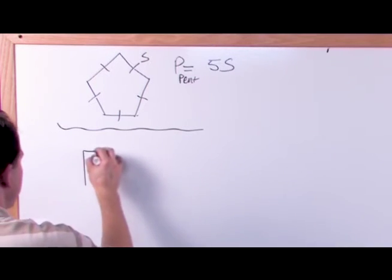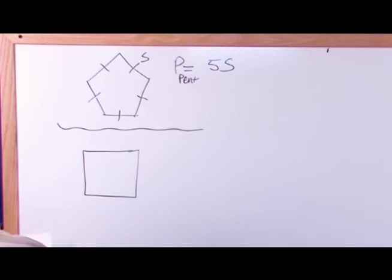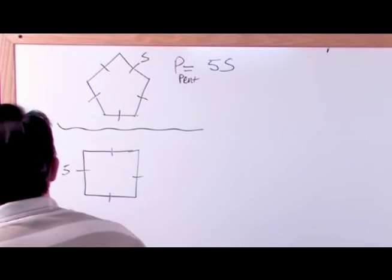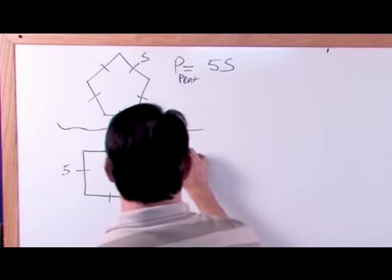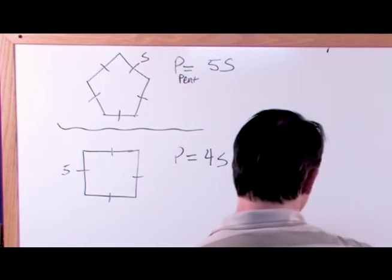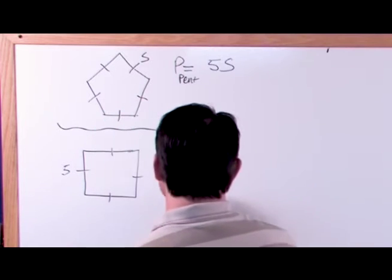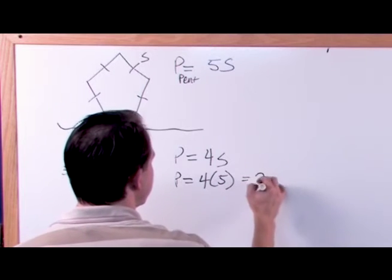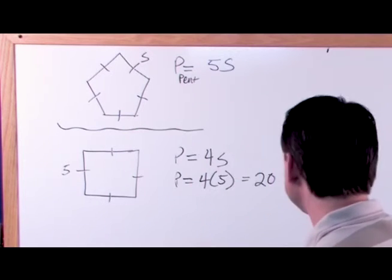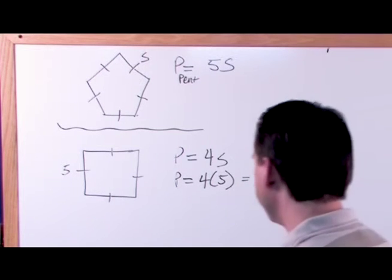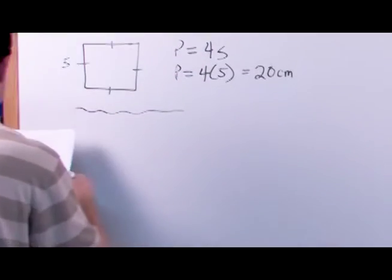They're not going to tell you it's a square — they're just going to draw a picture and put little marks here, which means all sides are equal, and tell you this length is 5. The perimeter is just equal to 4 times s for a square. So the perimeter equals 4 times 5, which is 20. If your unit was centimeters, then your unit will be centimeters here.